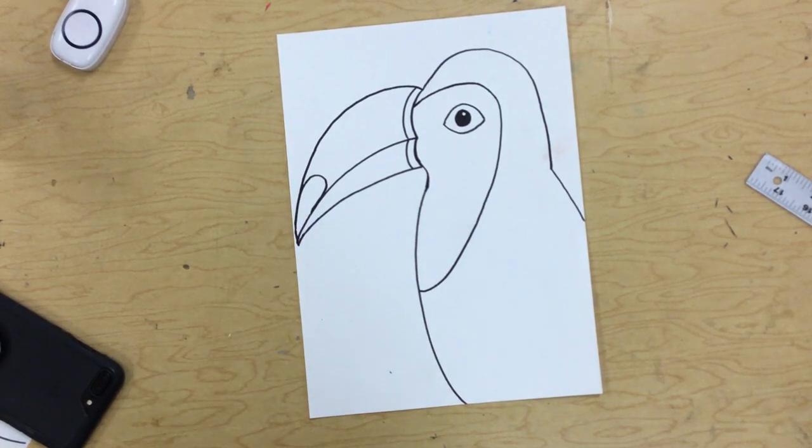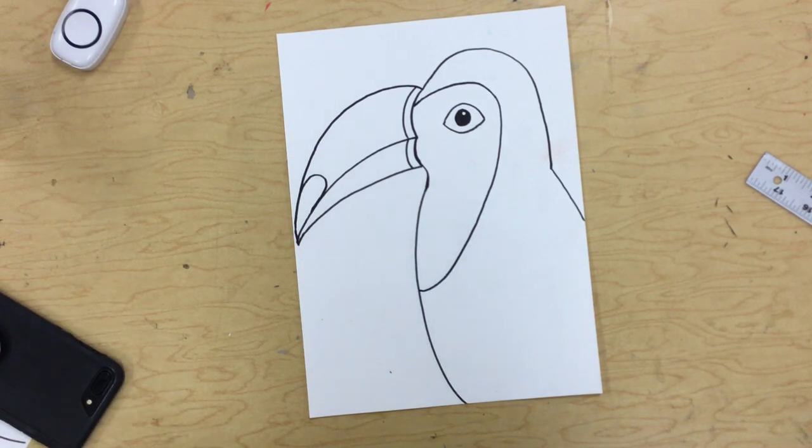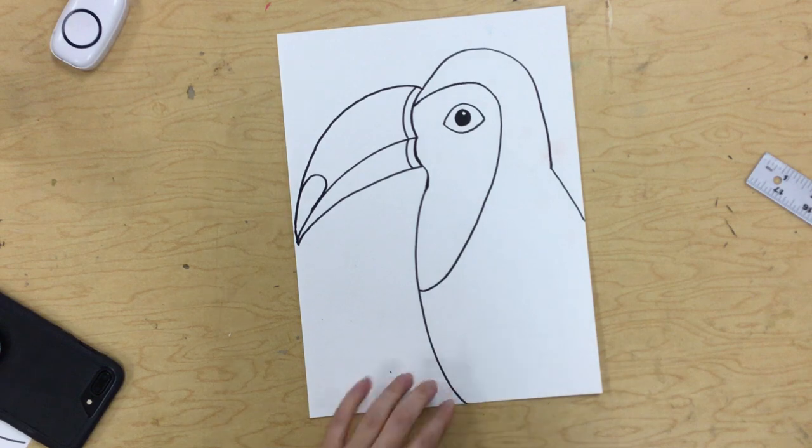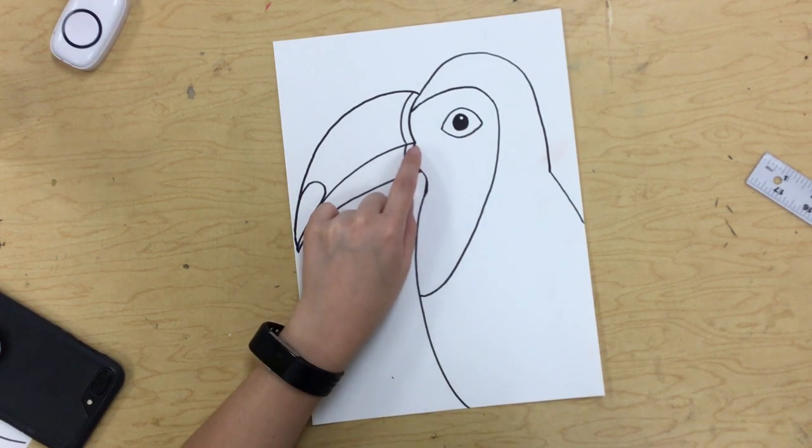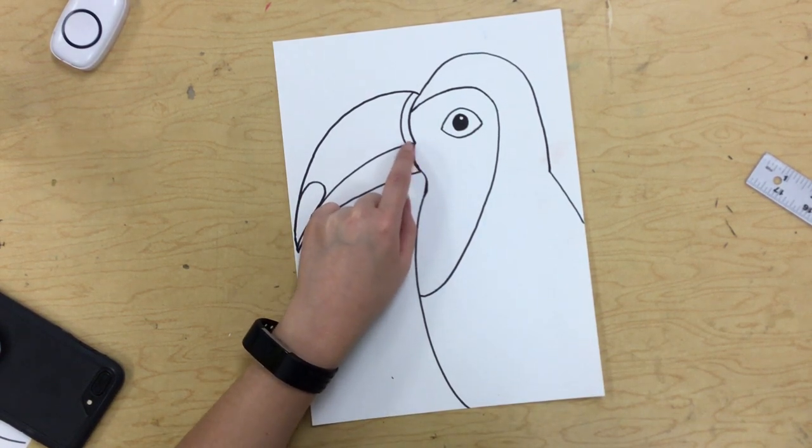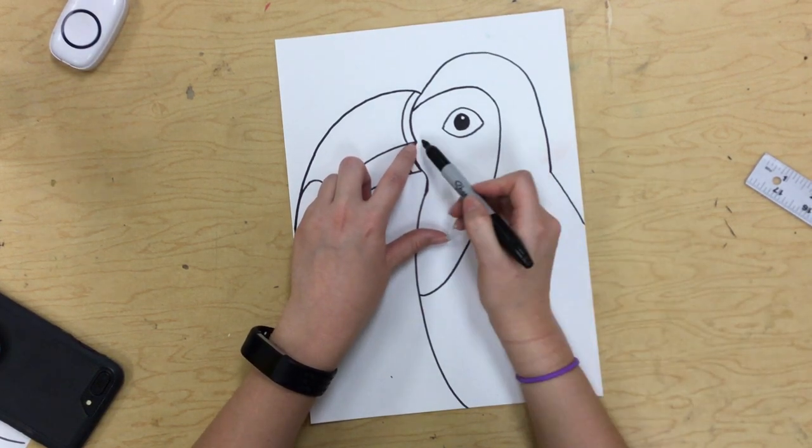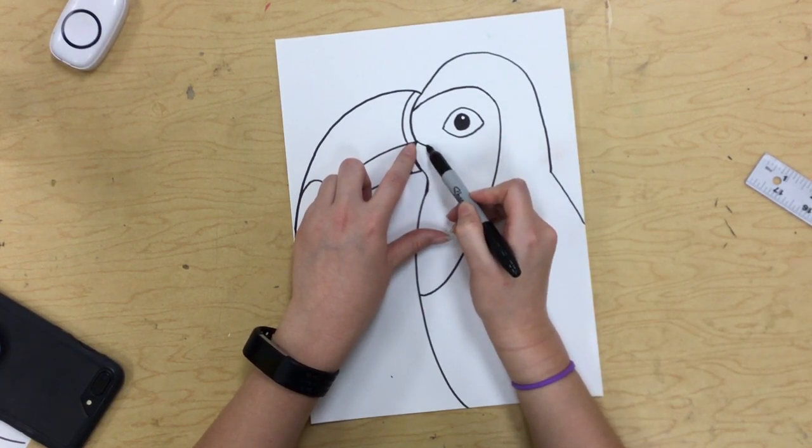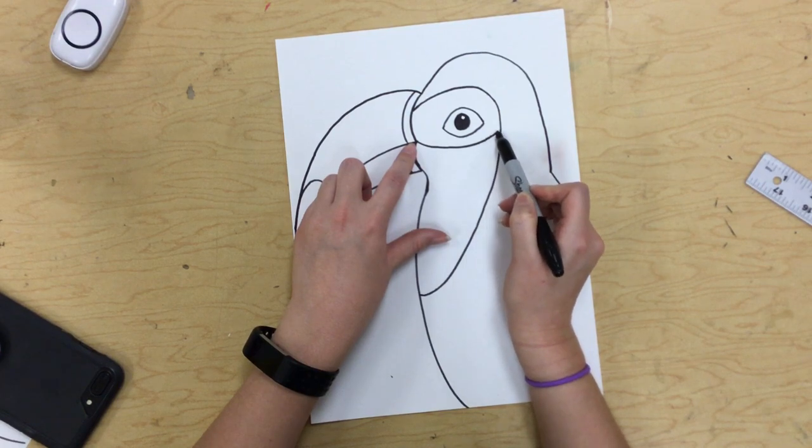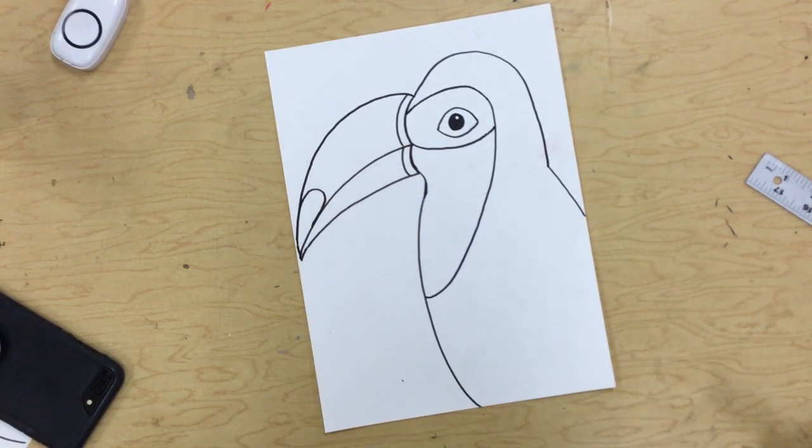That space will be white. It's kind of like his little white on his chest, right? Then, at that same little point, where the two curves of our beak are, we're going to start there, and I'm going to make a line that curves and goes under his eyeball and touches that line we just made.